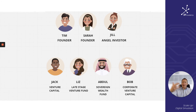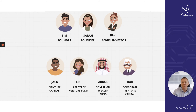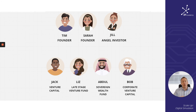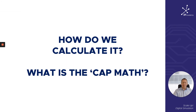As time progresses, the company needs more financing to continue growing. That would hypothetically introduce later-stage investors: Jack working for a venture capital firm, Liss working for a late-stage venture fund, Abdul working for a sovereign wealth fund possibly in the Middle East, and Bob working for a corporate venture capital arm. Over time the company would grow, raising financing and hopefully getting larger valuations for each round. Tim, Sarah, and Jill would all get diluted — but this is part of the company-building you go through in Scale Up, and if you do it right, dilution doesn't really matter.